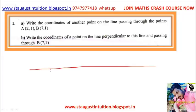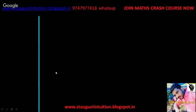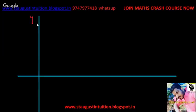Now, we have to say A is a point at (2,1). This is the Y-axis and this one is the X-axis. On the X-axis we count 1, 2, 3, 4, 5, 6, 7.